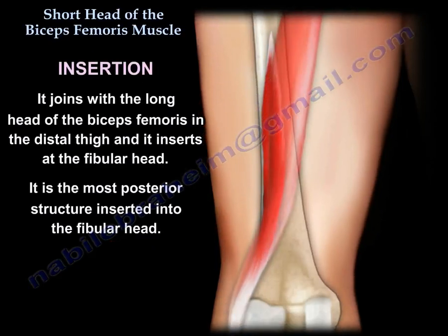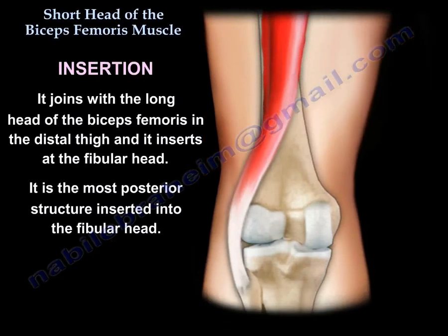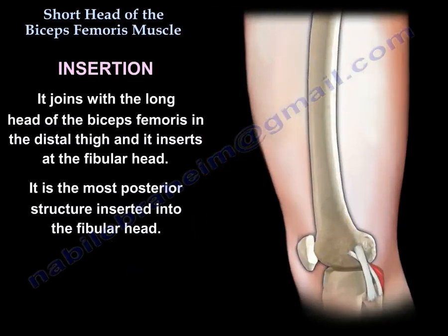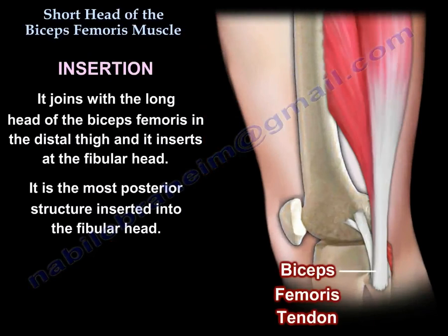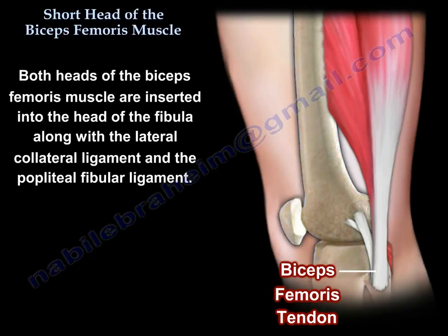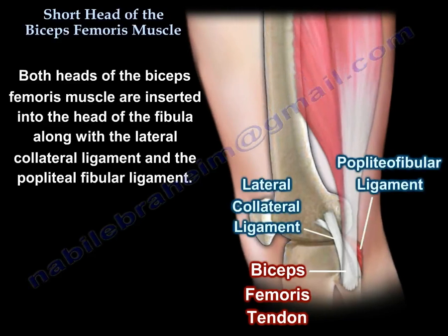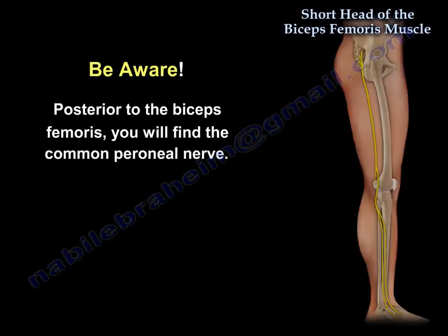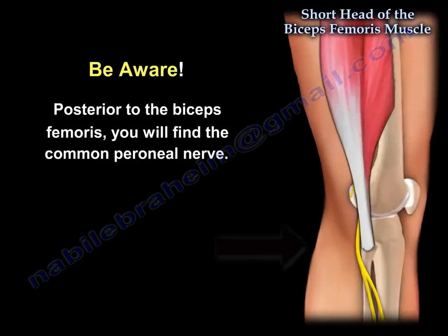Regarding insertion, it joins with the long head of the biceps femoris in the distal thigh and inserts at the fibular head — it is the most posterior structure inserted on the fibular head. Both heads of the biceps femoris are inserted into the head of the fibula along with the lateral collateral ligament and the popliteofibular ligament. From anterior to posterior: the lateral collateral ligament is most anterior and the biceps femoris is the most posterior structure at the fibular head. The common peroneal nerve lies posterior to the biceps femoris.